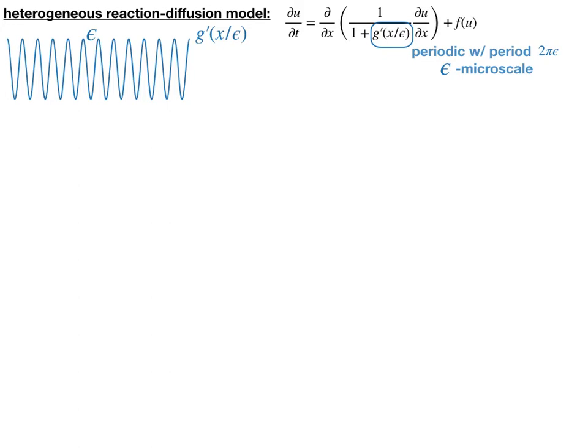If epsilon becomes wider and wider, that will start to break the general form of a standard traveling front, because you no longer have anything that behaves even to zeroth order like a traveling front. The idea is that this microscale is small enough that we can approximate its effects by saying we have a perturbed version of what we'd have in the limit as epsilon goes to zero. As epsilon goes to zero, the oscillations become high enough that the effect is that you just recover the homogeneous system.